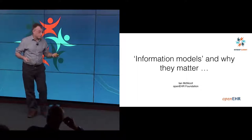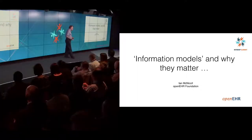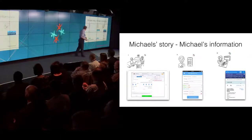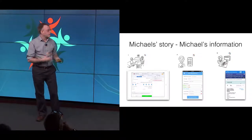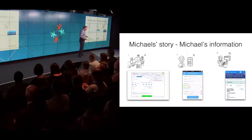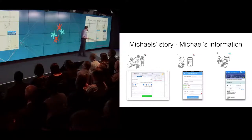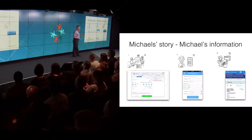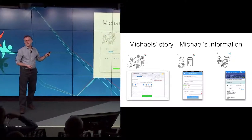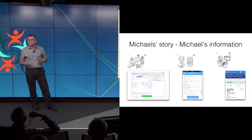It is very much about developing clinical content and information models for systems or for clinicians. So what is this mysterious thing called the information model and why does it matter? Let's pull back and flesh out Michael's story. Effectively, what we have here, for part of this journey — which is the discharge — we've got effectively three applications trying to talk to each other. There's probably a pharmacy system in there somewhere. We've got some kind of hospital system, a GP system on the far right, and in the middle we've got this magical medication application. The reality is that Michael's story is really about Michael's information — the clinical information about Michael.